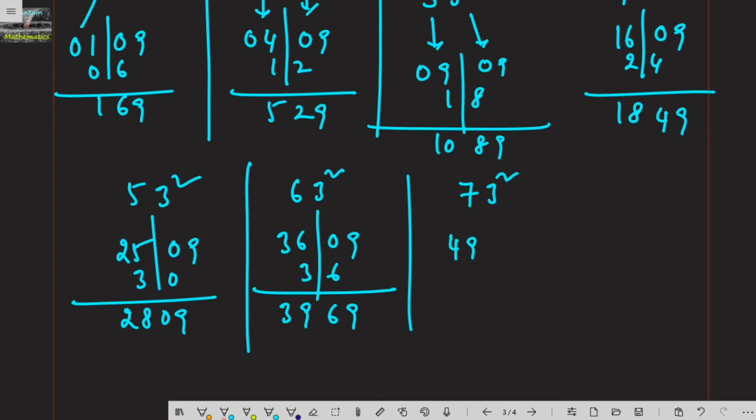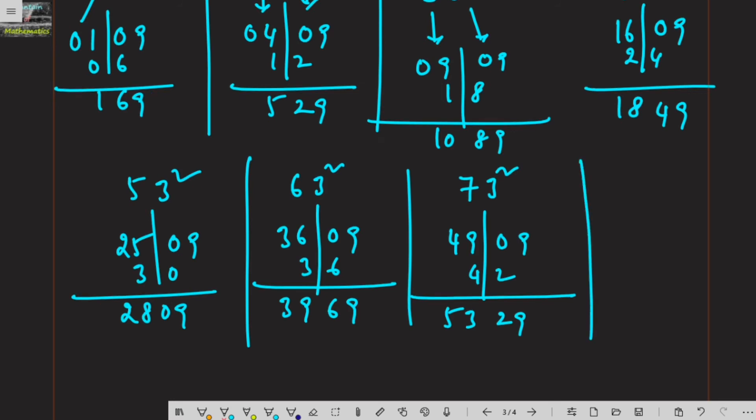7 square is 49, 3 square is 09, and 7 times 6 is 42. So your answer is 5,329. And next, 83 square: